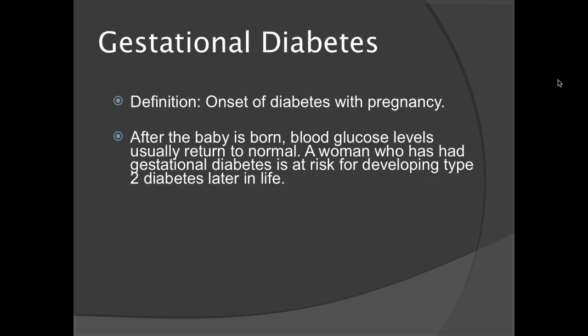Gestational diabetes is the onset of diabetes with pregnancy. Usually after the baby is born, blood glucose levels return to normal. But a woman who has had gestational diabetes is at risk for developing Type 2 diabetes later in life.